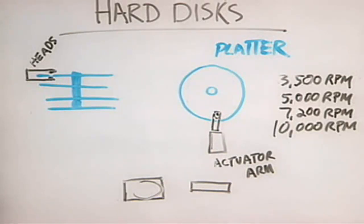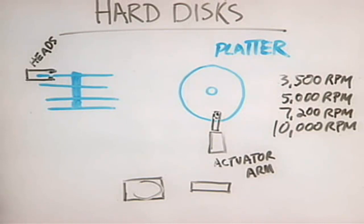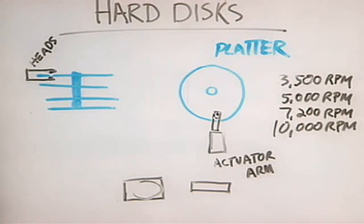In the early days, these actuator arms were moved by a stepper motor, similar to that used in a floppy disk drive. These did not work that well because the stepper motors actually wore out. They could also shift just a little bit due to temperature — if it got really hot or really cold — or if you changed the orientation of the drive in reference to gravity, this could affect the calibration of the actuator arm such that you couldn't read data off the disk anymore.